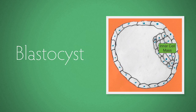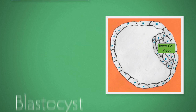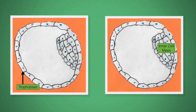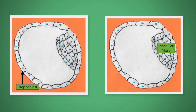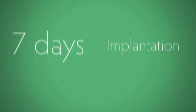Eventually the morula becomes a structure known as the blastocyst, a hollow ball-like structure with an inner mass of cells. On the right is the inner cell mass and this is what eventually becomes the baby. On the left is the trophoblast and that is involved in forming the placenta.